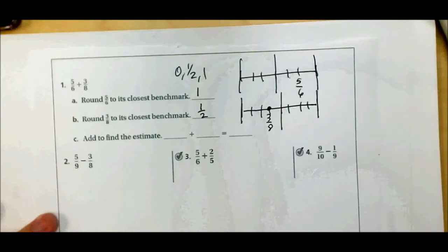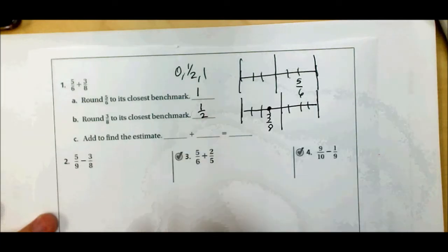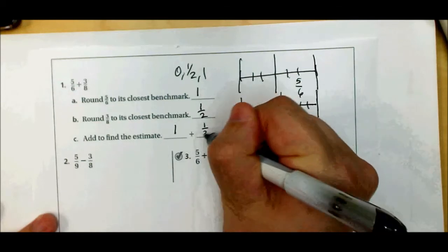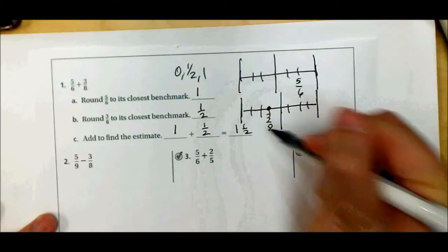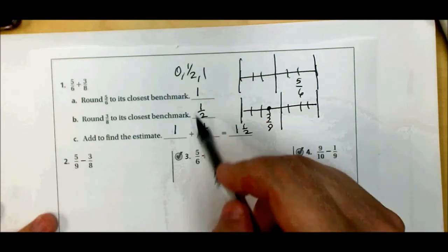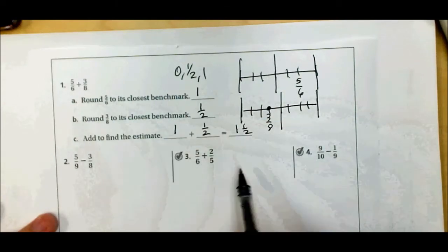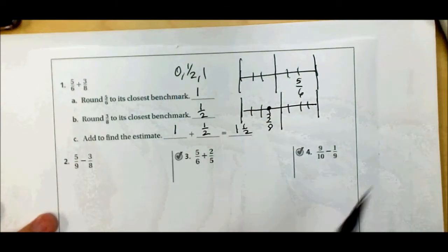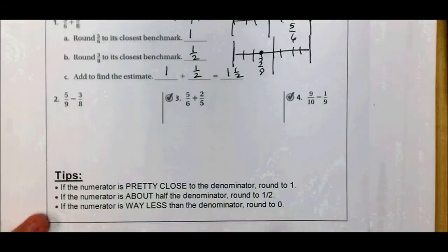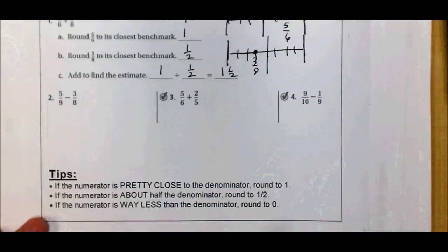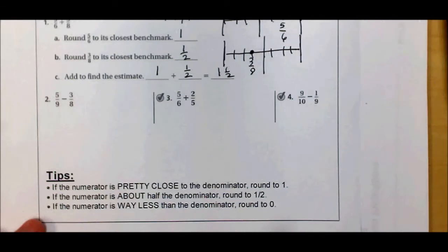That's three-eighths right there. So I rounded five-sixths to one whole, and I rounded three-eighths to one-half, and I get one and one-half. So five-sixths plus three-eighths is about one and one-half. Now here are some tips that will help figure out what your benchmark is for the rest of these problems.